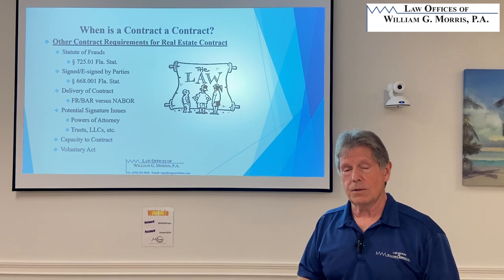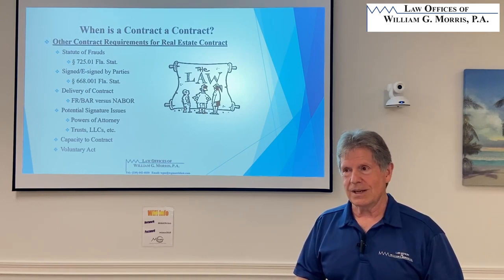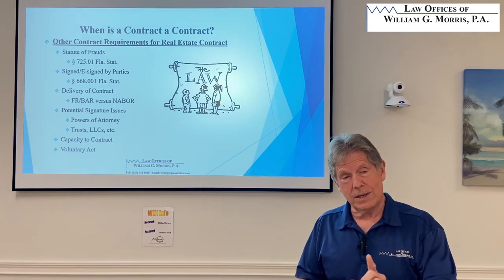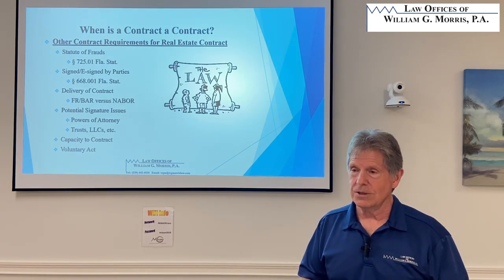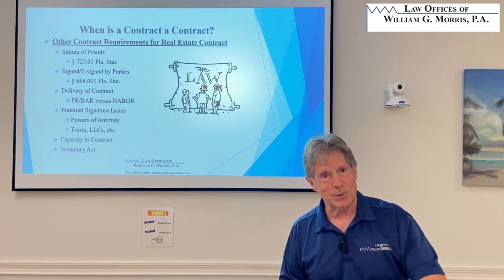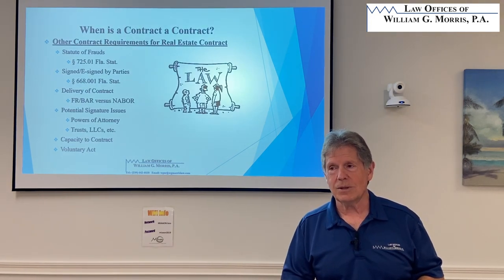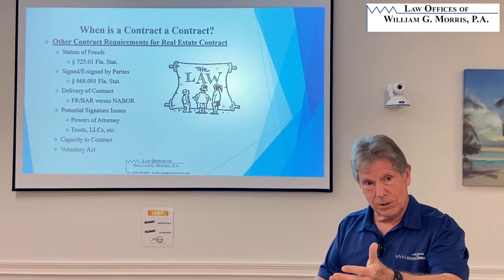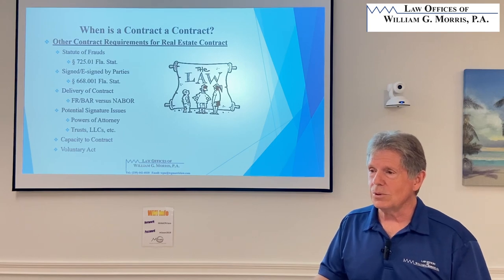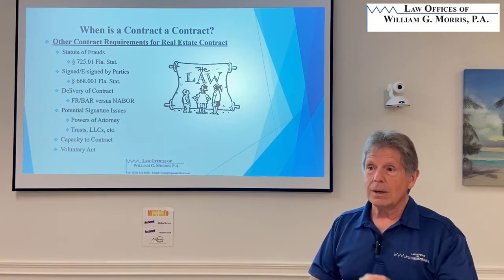The NABOR contract says the effective date is the last dated initials or signature. FAR BAR says the effective date is the last date when it's delivered to the other side. When it's 'delivered' becomes questionable — is emailing it at 2 a.m. actual delivery? There's the mailbox rule from when we sent things by post office, but I'm not sure about email. We still have to have delivery even under the NABOR contract. It behooves you to bird-dog that acceptance to get it back as fast as you can, because delivery is required for a binding contract.